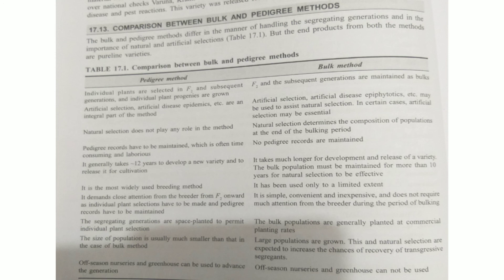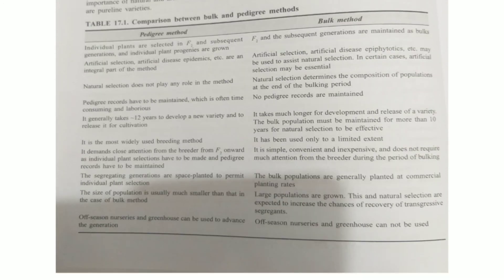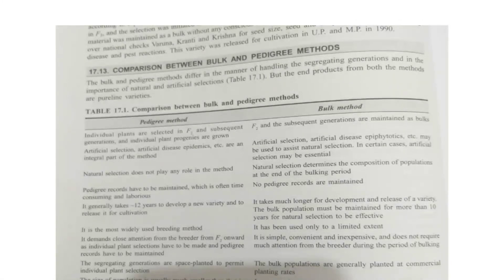In the bulk method we select from a large population. We need to select segregating varieties and heterogeneous varieties, and from them select homozygous lines from the segregating generation. I hope this is clear.